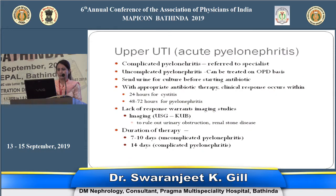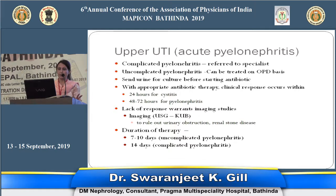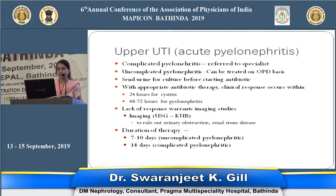Complicated acute pyelonephritis should be referred to a specialist for management. Uncomplicated pyelonephritis can be treated on an OPD basis. Urine culture should always be sent before starting antibiotic therapy. The patient should respond within 48 to 72 hours; if not, further imaging such as ultrasound or CT scan of the kidneys is indicated to rule out obstruction or other complicating factors. Duration of therapy is 7 to 10 days with quinolones and 14 days with cephalosporins.